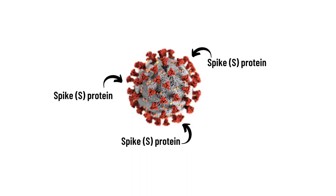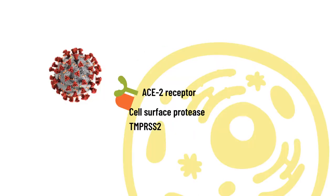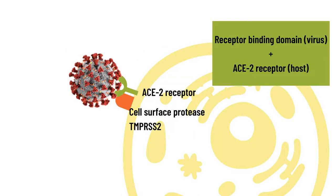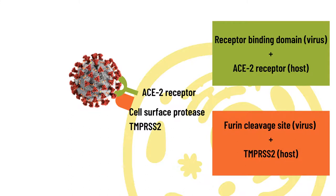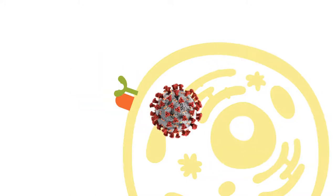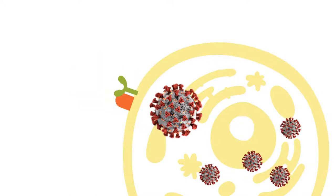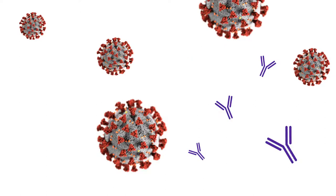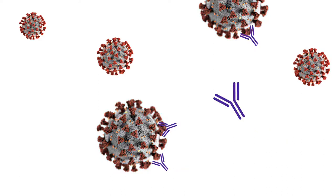For SARS-CoV-2 to replicate in host cells, it must first use its receptor binding domain on the spike protein for attachment to the cells. In addition, the cell surface protease TMPRSS2 facilitates the cutting of a part on the spike protein called the furin cleavage site, allowing the virus to enter host cells for viral replication. Moreover, most antibodies generated through infection or vaccination are stimulated by the spike protein — in other words, the immune system of the host eliminates SARS-CoV-2 by recognizing the spike protein.